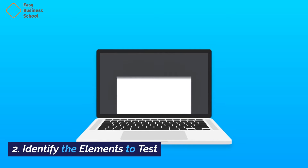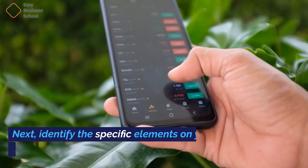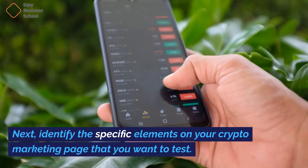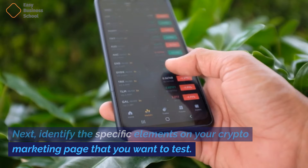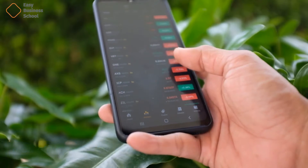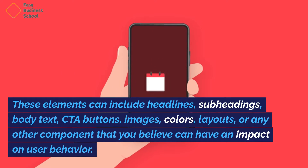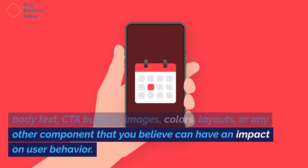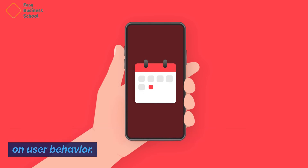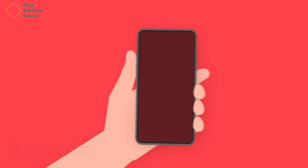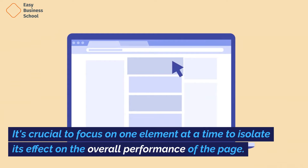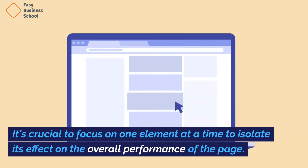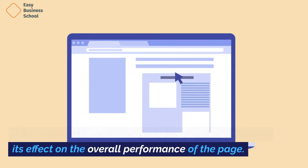Step 2: Identify the elements to test. Identify the specific elements on your crypto marketing page that you want to test. These elements can include headlines, subheadings, body text, CTA buttons, images, colors, layouts, or any other component that you believe can have an impact on user behavior. It's crucial to focus on one element at a time to isolate its effect on the overall performance of the page.